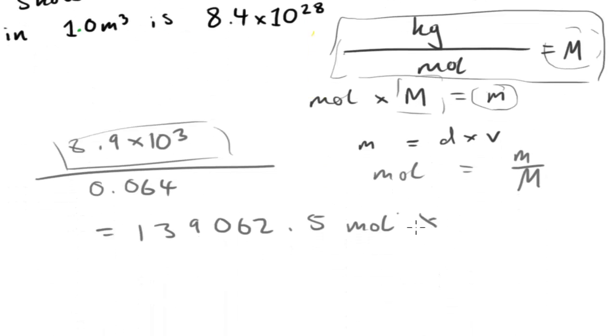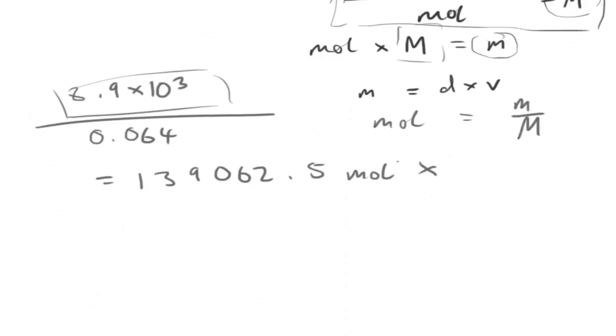All we need to do is multiply our number of moles here by the constant. So that gives us the number of copper atoms. Multiply that by the 6.02 times 10 to the 23, and that gives us our answer.